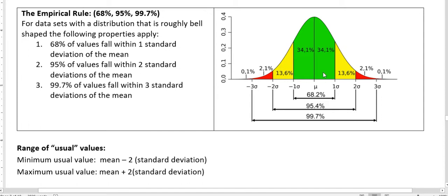And so when we talk about unusual values, we talk about values that are outside of that percentage, right? So if it's outside of two standard deviations, we start to say it's unusual.